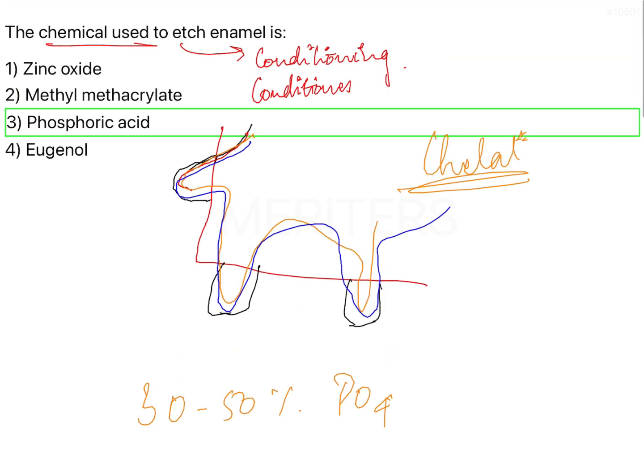One more important point you need to remember is that the etchant is supposed to be placed for 15 to 25 seconds. The clinical way of counting this is you count 1001, 1002, 1003, all the way up to 1015. That actually takes the same amount of time as 15 seconds. These are the important points that you need to remember about etching.